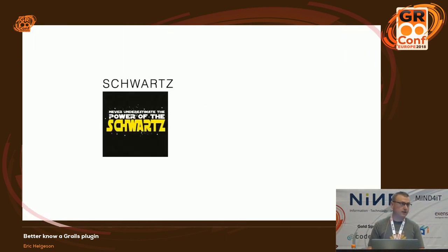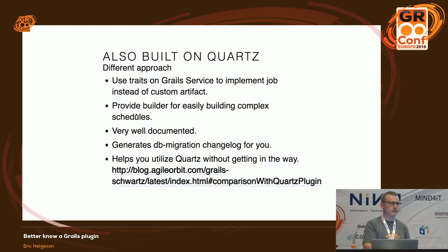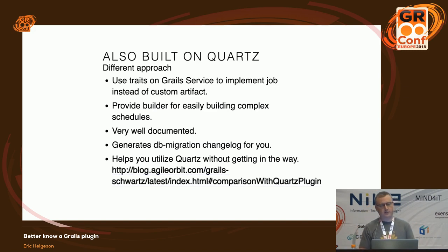There's also the Schwartz plugin, built by my employer Agile Orbit. It's also built on Quartz but takes a different approach — it uses traits instead of custom artifacts, giving you a cleaner ability to see what the job is doing. You extend a service with the QuartzJob trait and use a regular service. It's well documented and generates a database migration changelog for you if you use persistent scheduling.